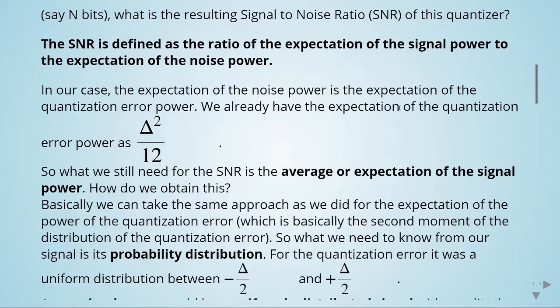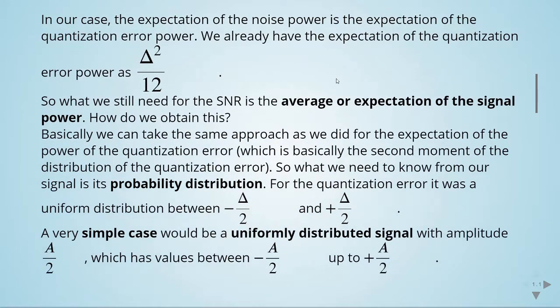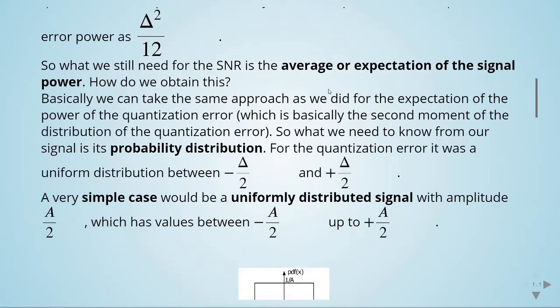To obtain the signal power, we take the same approach as we did for the quantization error power, which is essentially the second moment of the distribution. What we need to know is the signal's probability distribution. For the quantization error, it was a uniform distribution between minus step size divided by 2 to plus step size divided by 2.